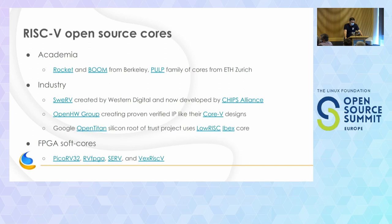We have Rocket and BOOM from Berkeley, and PULP from ETH Zurich which is a whole family of cores. Western Digital created something called SweRV, which they were using for storage controllers, and those are open source as well. The Open Hardware Group has been trying to create verified IP that companies could drop into their own ASIC designs, called Core-5. There's also someone here from LowRISC — they've been involved in the OpenTitan project, which is a silicon root of trust project, and that uses an open source core as well.